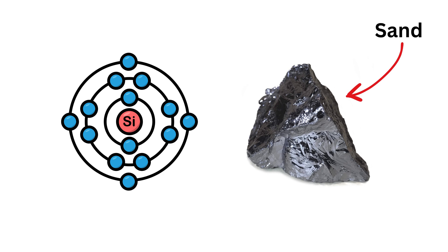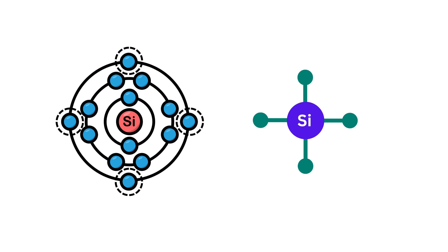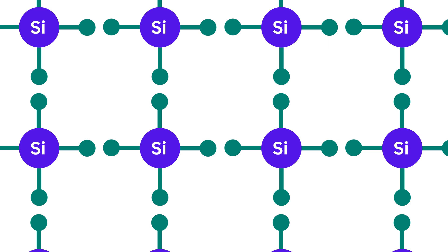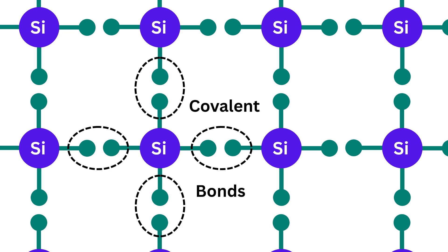Silicon is an element found in sand and is very common in nature. It has four valence electrons. If you take a lot of silicon atoms and put them together, they form a crystal. In this crystal, each silicon atom shares its four electrons with four neighboring silicon atoms. This sharing forms covalent bonds, resulting in a solid, stable structure where every atom is tightly connected.